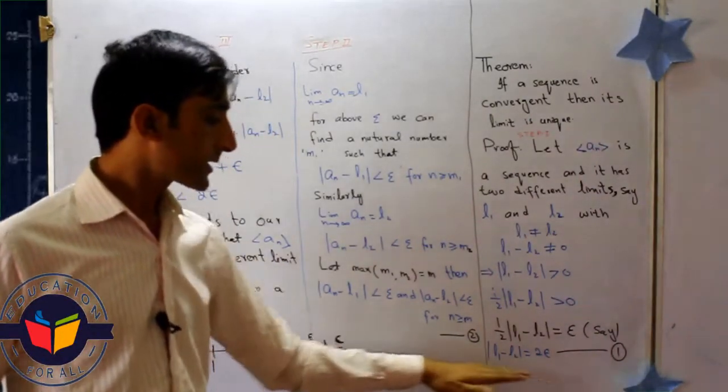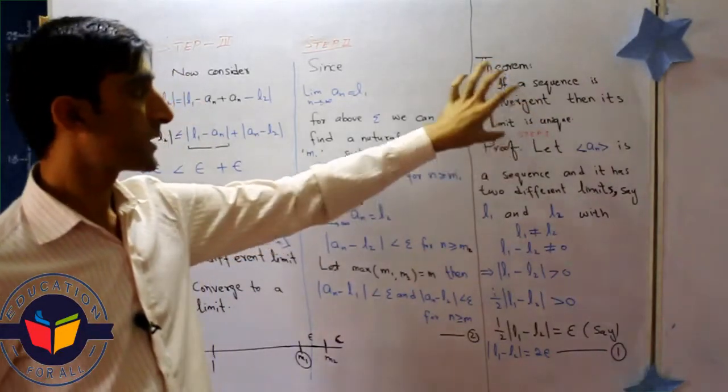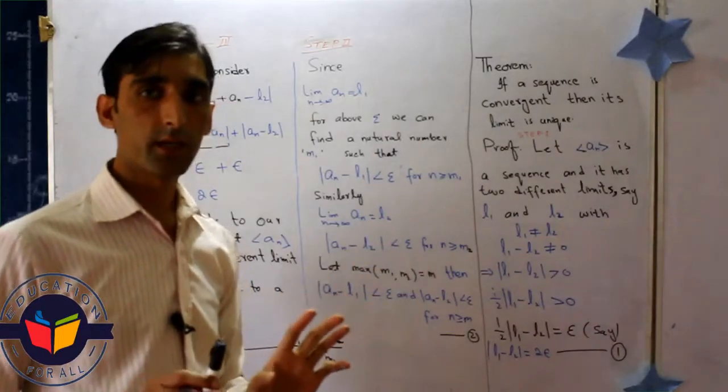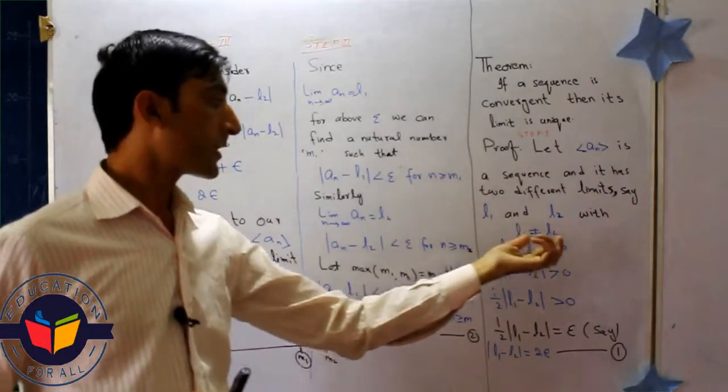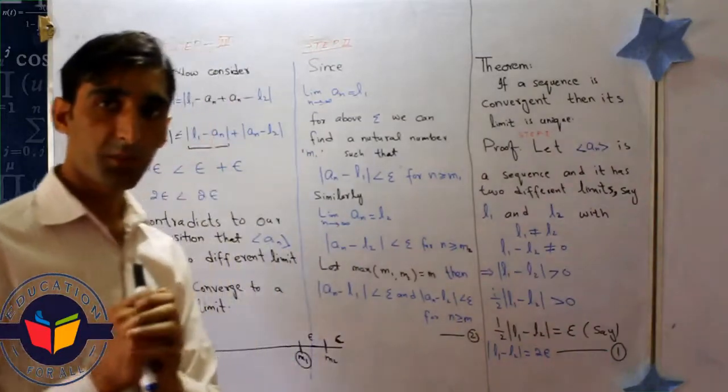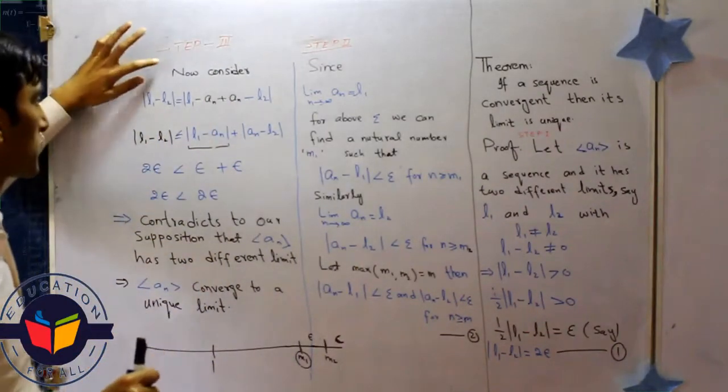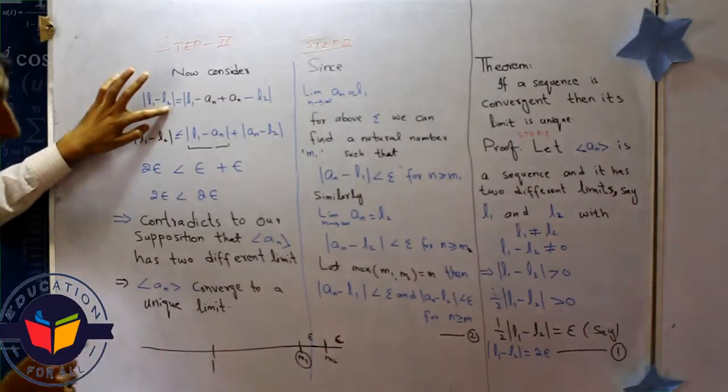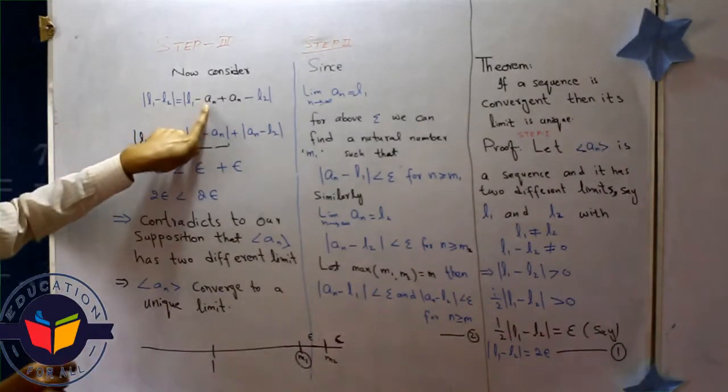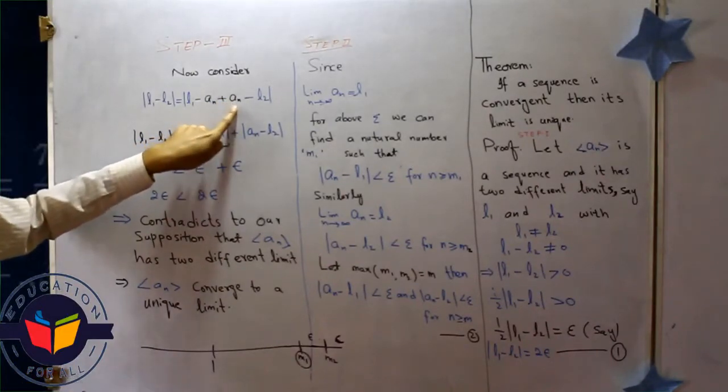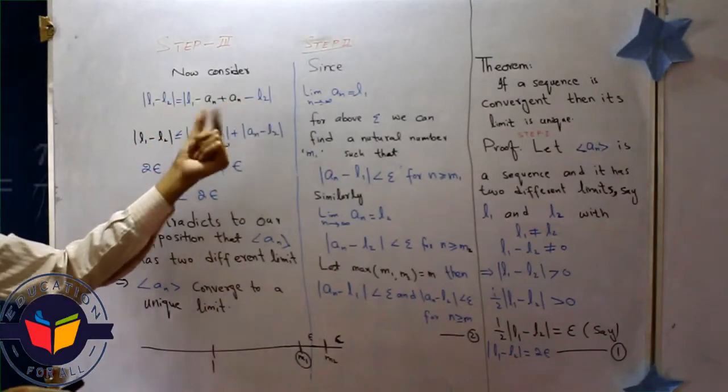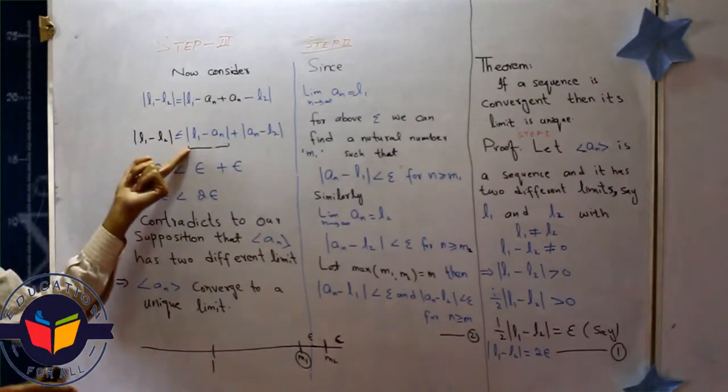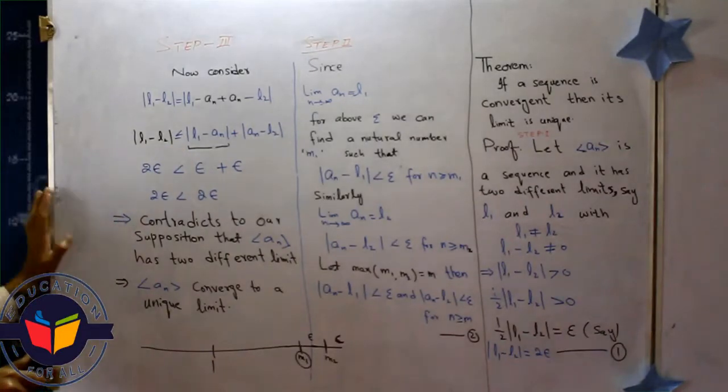Both our statements are provided in this theorem. Now we want to show that l1 and l2 are equal. Let's move on to step 3. Now we consider l1 minus l2. We take it, and I subtract and add this term. After this, it is in the modulus. If I break this one, you know, we use the inequality sign here that is less than or equal to.